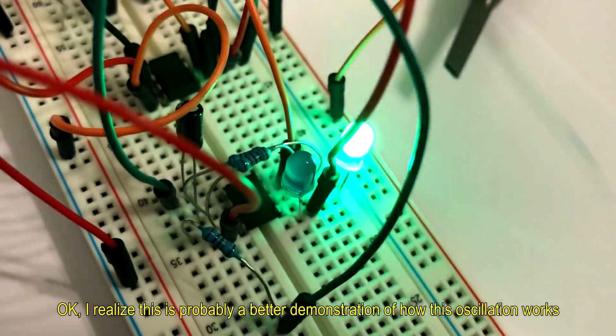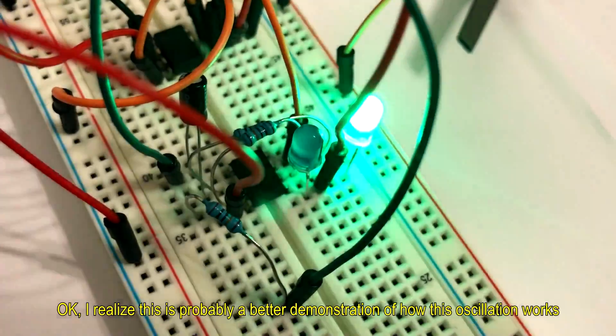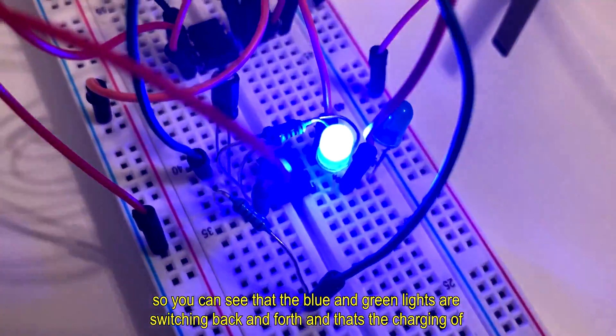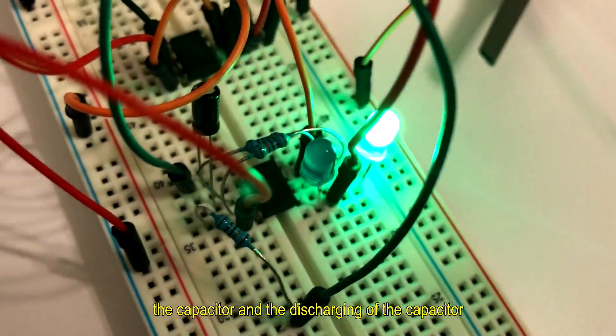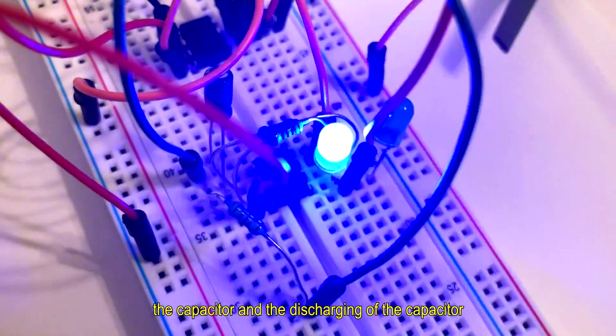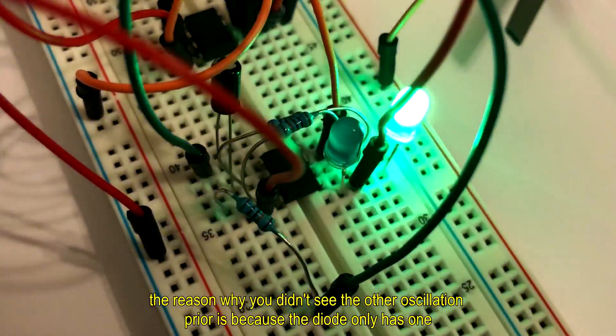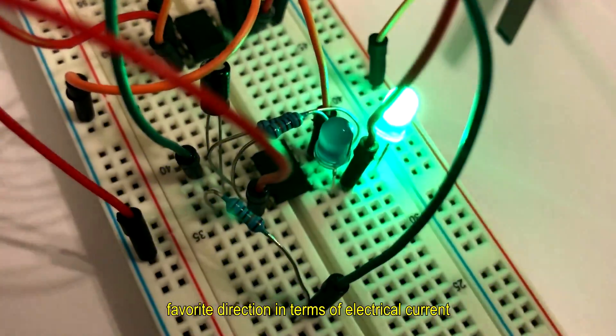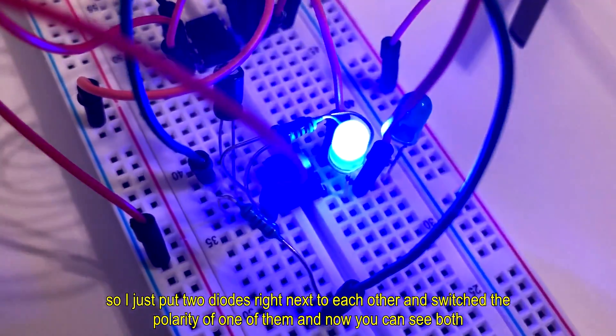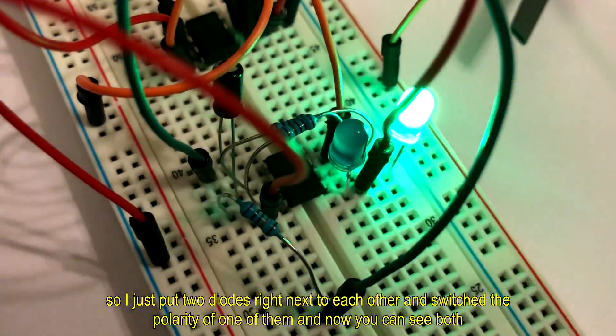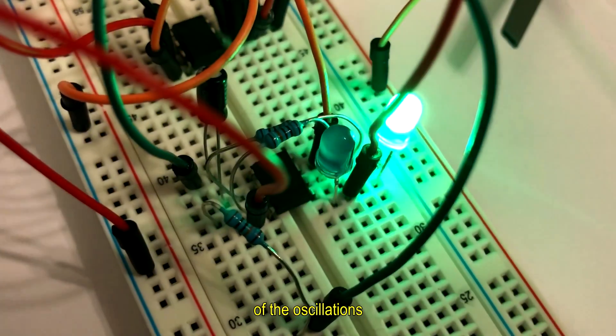This is probably a better demonstration of how this oscillation works. You can see that the blue and green light are switching back and forth. That's the charging of the capacitor and the discharging of the capacitor. The reason why you didn't see the other oscillation prior is because the diode only has one favorite direction in terms of electrical current. So I just put two diodes right next to each other and switched the polarity of one of them.